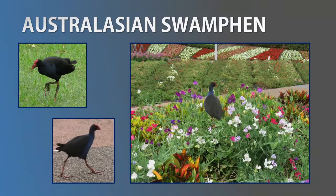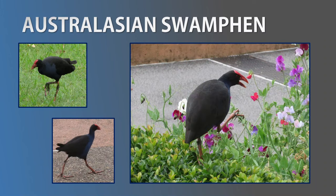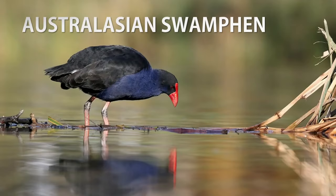Another distinguishing feature of the Swamp Hen is its strong feet and long toes, which it uses to dig, rip, and tear thick vegetation. They are often seen balancing on one leg while eating with the other, just like a parrot. Swamp Hens can be very territorial and aggressive toward other birds. Territory disputes can be vicious — two to four birds will run toward each other and jump feet first, ripping with their claws. They can occasionally attack, kill, and even eat the offspring of other waterfowl.